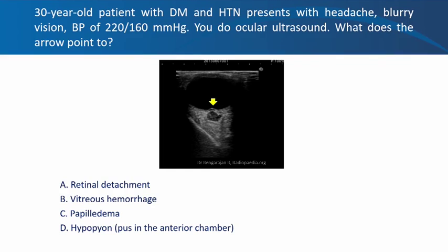The last question is slightly different: a 30-year-old patient with diabetes mellitus and hypertension presents with headache, blurry vision, and very high blood pressure of 220/160 mmHg. You perform ocular ultrasound. What does the arrow point to — retinal detachment, vitreous hemorrhage, papilledema, or pus in the anterior chamber? Imaging from the anterior aspect, the globe is visible with the retina posteriorly, the optic nerve complex, and the optic disc. The optic nerve sheath complex appears wide and optic disc cupping is seen — the most likely diagnosis is papilledema.